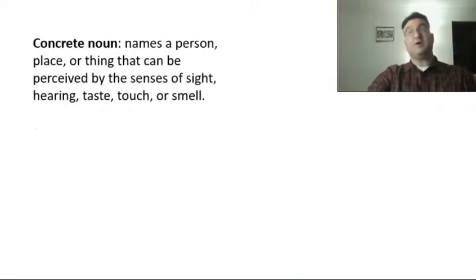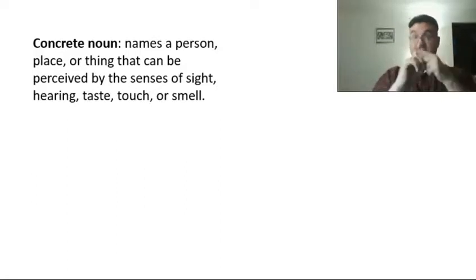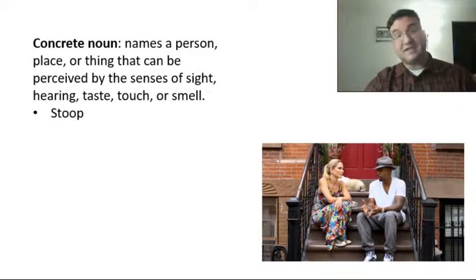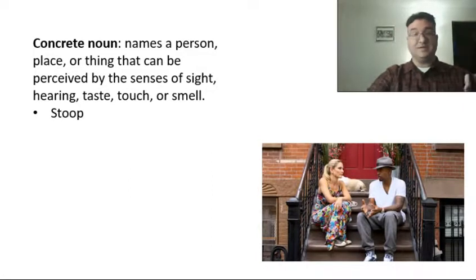Next, we have concrete nouns. Concrete nouns name a person, place, or thing that can be perceived by the senses of sight, hearing, taste, touch, or smell. The stoop outside of her door is a part of the story. A stoop is a concrete thing, usually, which is funny because we're talking about concrete nouns, but it's something that people can sit on or walk on and touch.